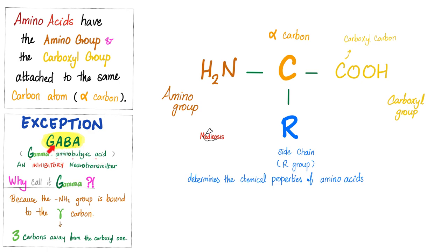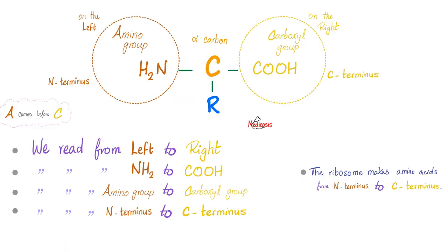Say it one more time, because it was so beautiful: gamma aminobutyric acid. Gamma! You know why we call it gamma? Because it's a gamma carbon, which is three carbons away from the carboxyl one. So after the carboxyl, you have alpha, then beta, then the gamma carbon.